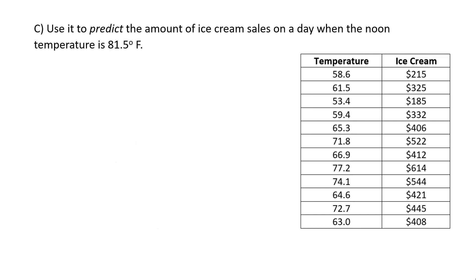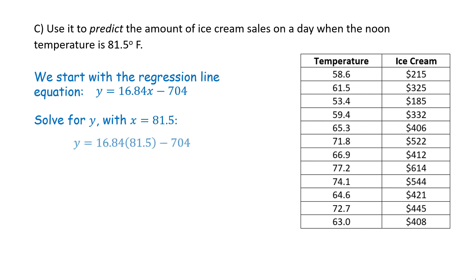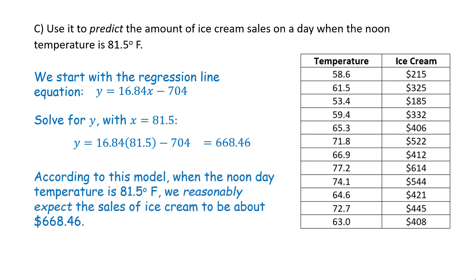Now we're going to use the equation of the regression line to predict the amount of ice cream sales on a day when the noon temperature is 81.5 degrees Fahrenheit. We begin with the regression line equation, which was y equals 16.84x minus 704. We're going to solve for y with the x value of 81.5. So we write y equals 16.84 times 81.5 minus 704. Compute that and you'll get 668.46. According to this model, when the noon day temperature is 81.5 degrees Fahrenheit, we reasonably expect the sales of ice cream to be about $668.46.